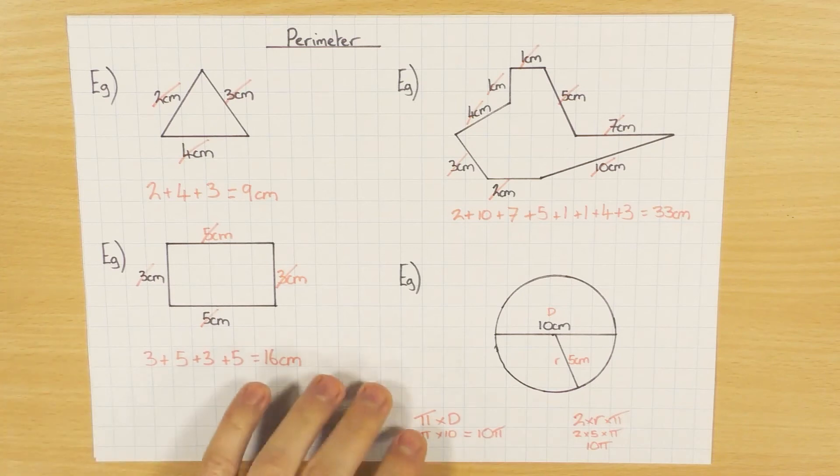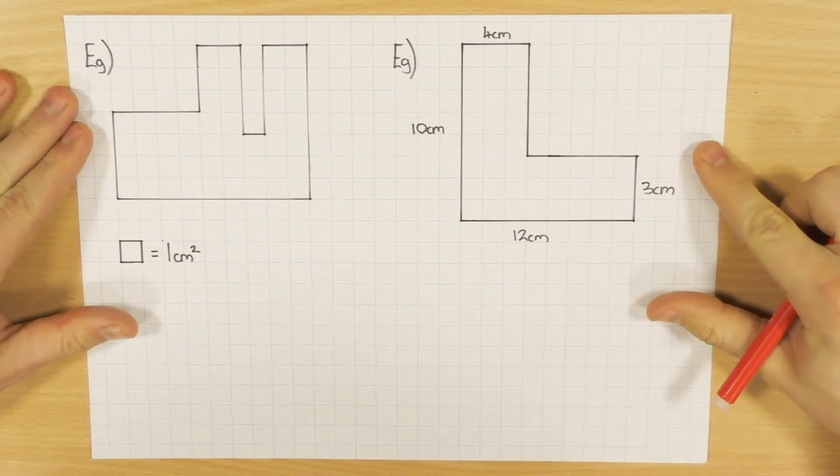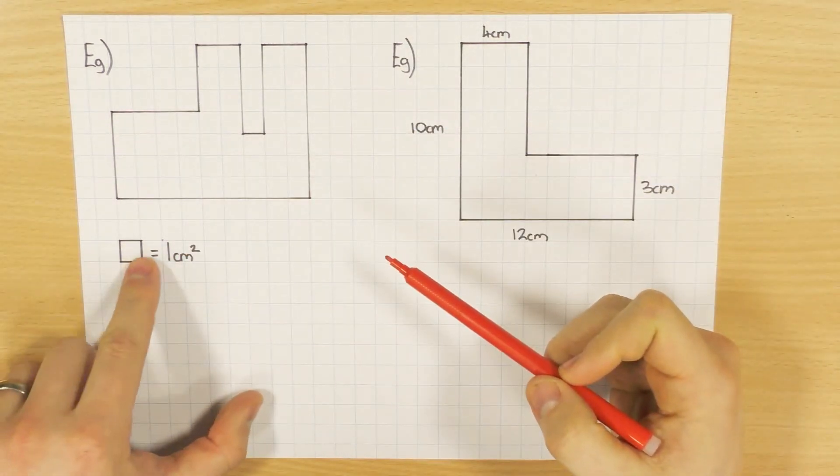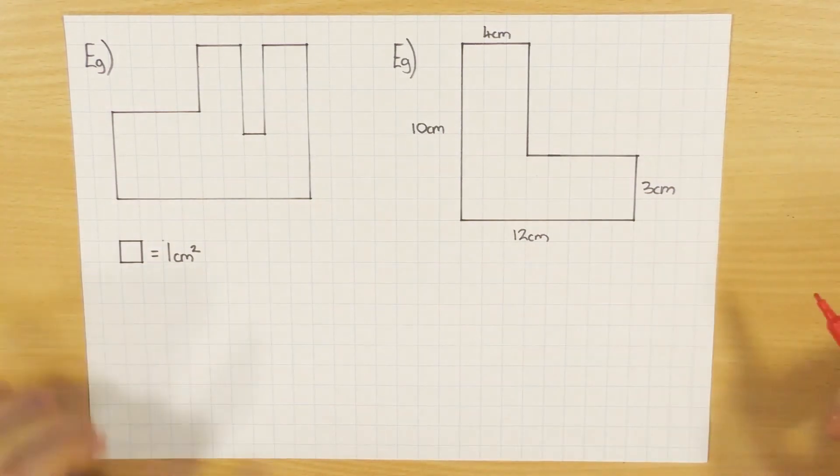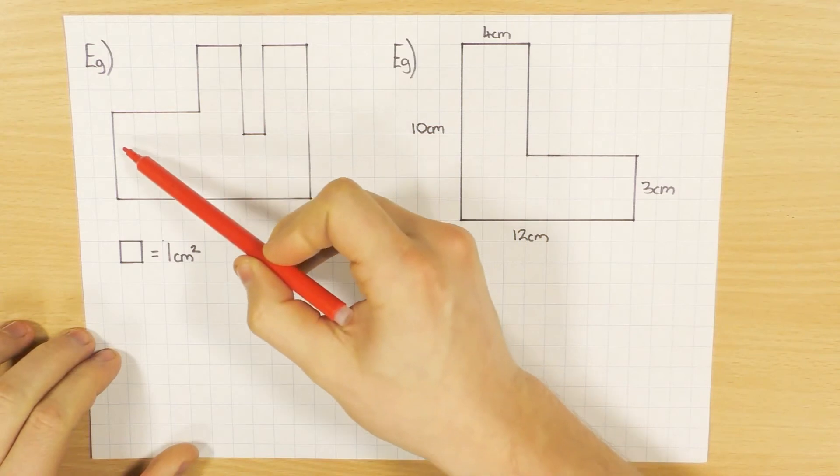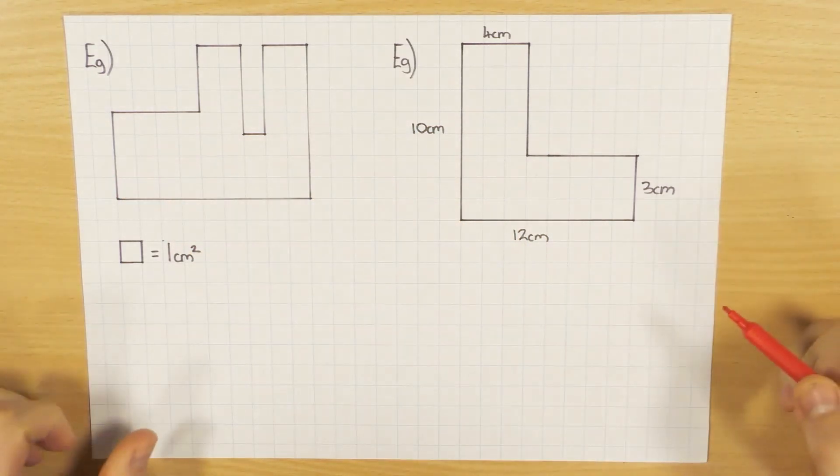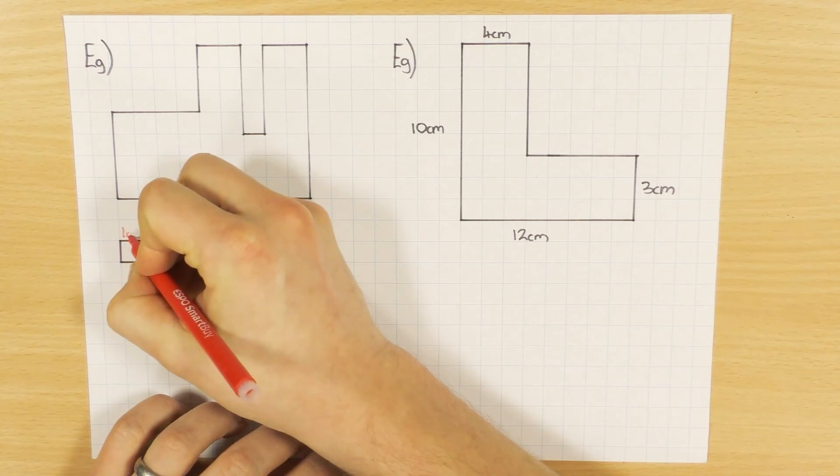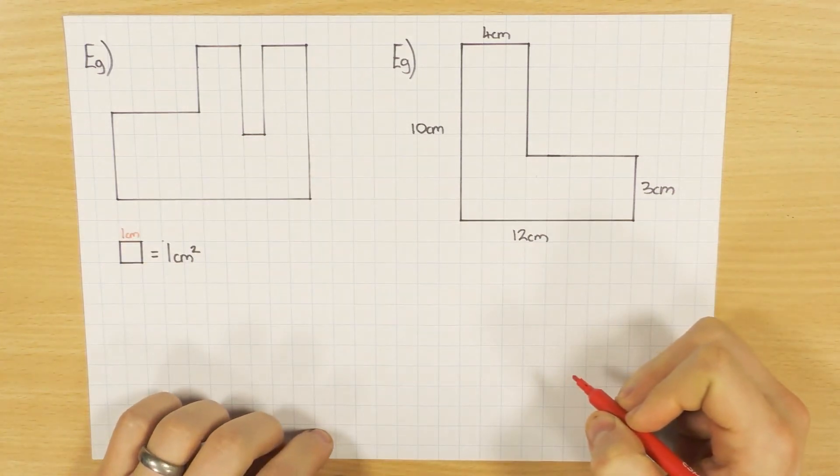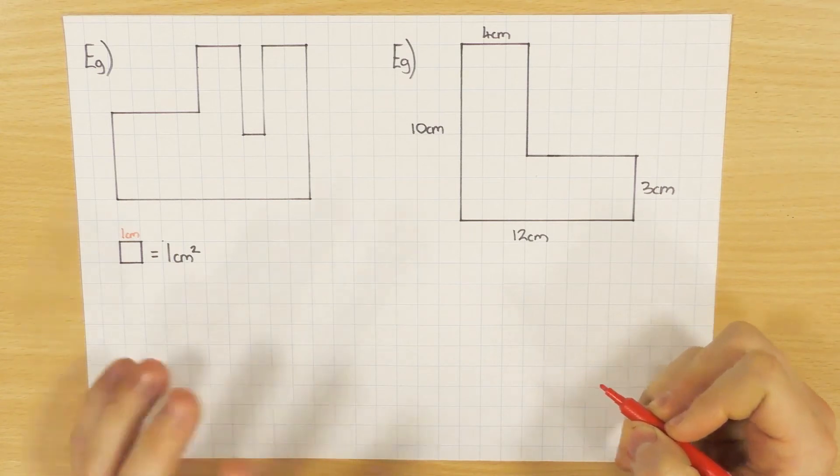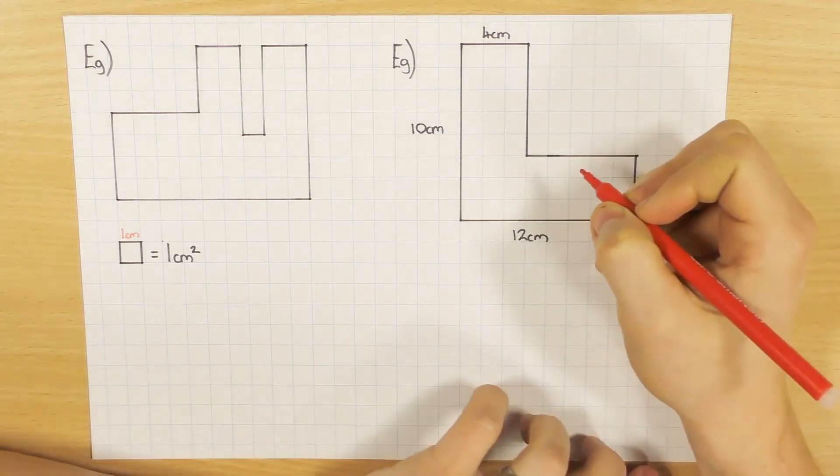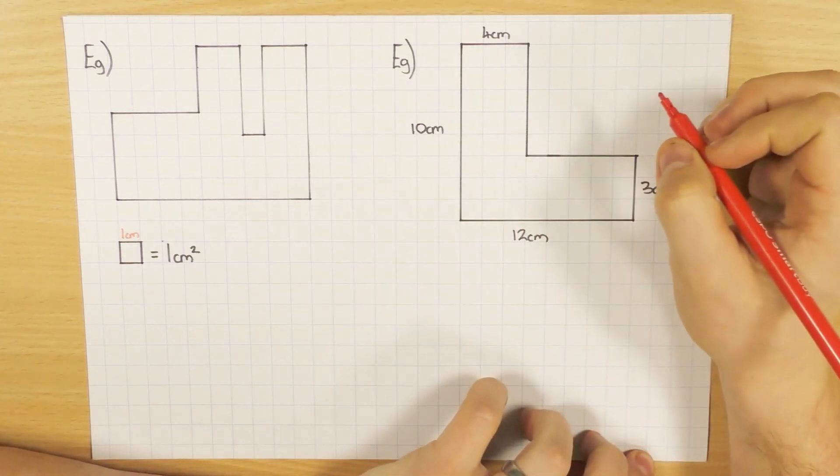I've got two more examples here. The first one hasn't got any length on it, but it tells you that one square equals one centimeter squared. Just like with area, you could count the squares, but we're doing perimeter. The perimeter means if this is a one centimeter square, one side is just one centimeter. Although this looks really easy, people make lots of mistakes because they don't do it systematically. This is the best way to get all the marks without silly mistakes.